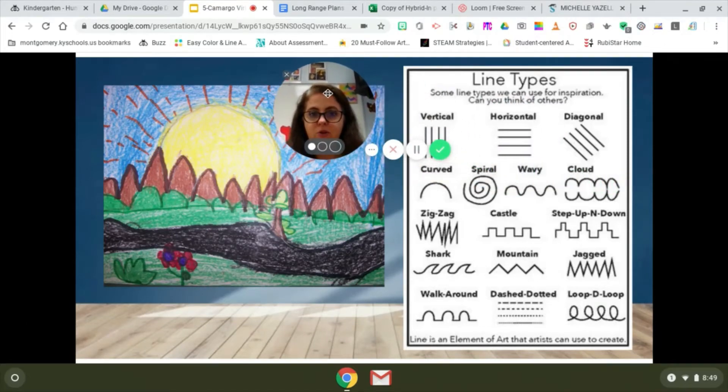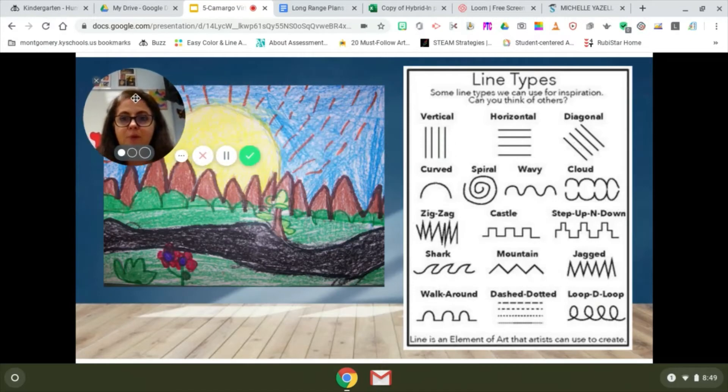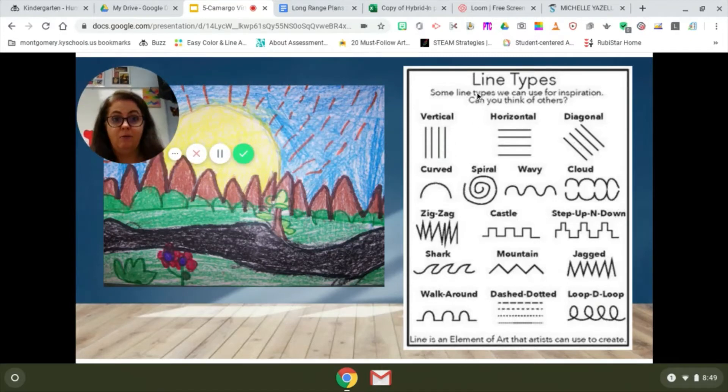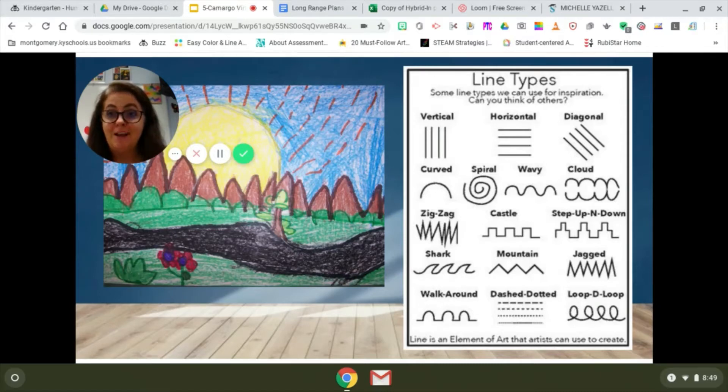I'm going to move my head out of the way because there's a paper here that says different kinds of lines, line types. Some kinds of lines we can use in our drawing. In class, the boys and girls got to stand up and practice drawing these lines in the air just so we could get some movement. If you want to stand up right now, you can stand up and you can draw these lines with me.